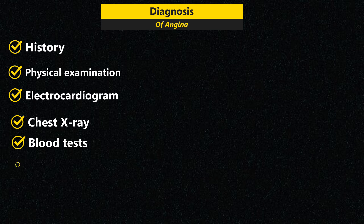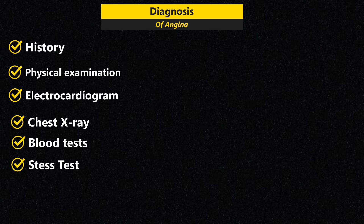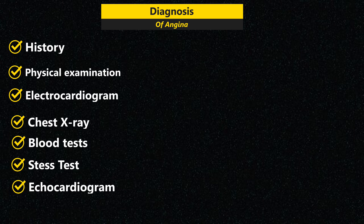A stress test is sometimes used because angina is easier to diagnose when the heart is working harder. It typically involves walking on a treadmill or riding a stationary bike while the heart is monitored. If you can't exercise, you may be given drugs that mimic the effect of exercise on the heart. An echocardiogram uses sound waves to create images of the heart in motion, showing how blood flows through the heart, and may be done during a stress test.